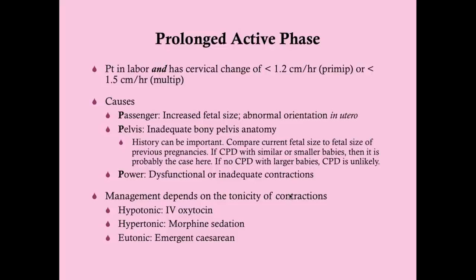Prolonged active phase can be determined two ways: by total hours — four to five hours for a multipara, five to six for a primapara — or by rate of cervical change. Examining the woman hourly, you calculate the rate of dilation. That rate should be no less than one to 1.2 centimeters per hour for a primapara and no less than 1.2 to 1.5 centimeters per hour for a multipara.